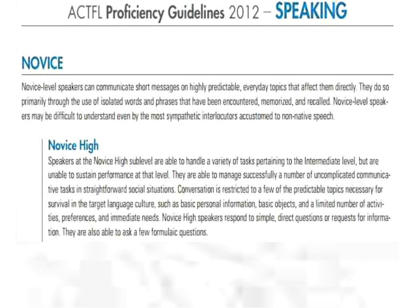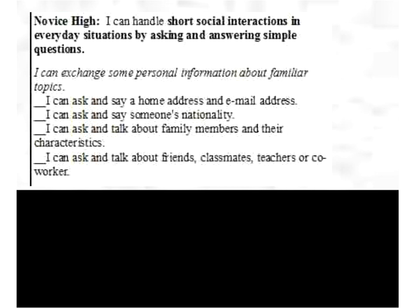Here are the actual proficiency guidelines — so wordy — compared to the can-do statements. For example: 'I can ask and say a home address and email address,' 'I can ask and say someone's nationality,' 'I can ask and talk about family members and their characteristics,' 'I can ask and talk about friends and family.' Students can look at these and know whether they can do it or not, and teachers can assess clearly too. It really adds so much more accountability to the language classroom because of how precise these are.